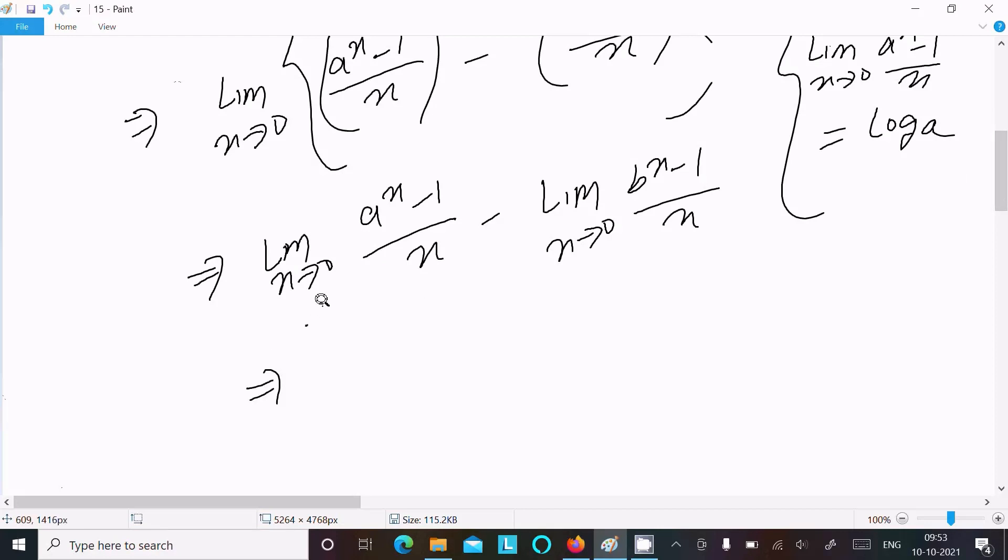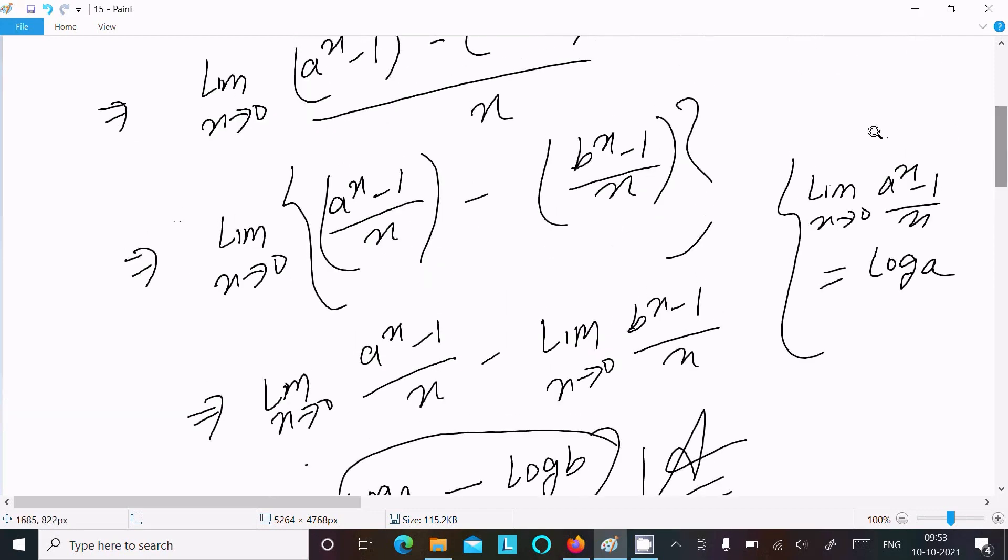So this return log a. And here b is there the same thing, so this return log b. So this is the answer of this limit question. So you should remember this formula.